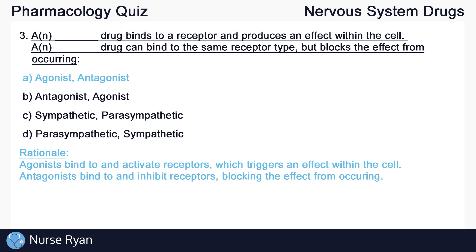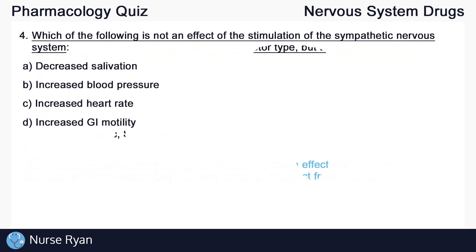Agonists bind to and activate receptors, which triggers an effect within the cell. Antagonists bind to and inhibit receptors, blocking the effect from occurring.